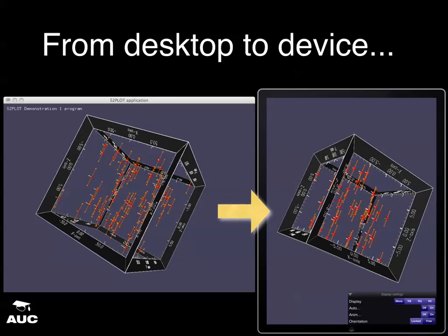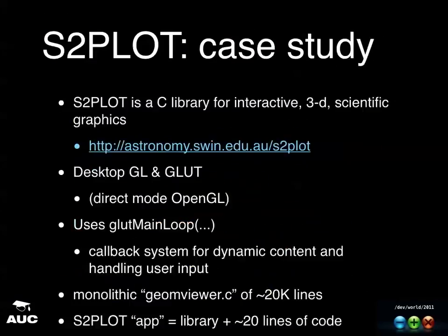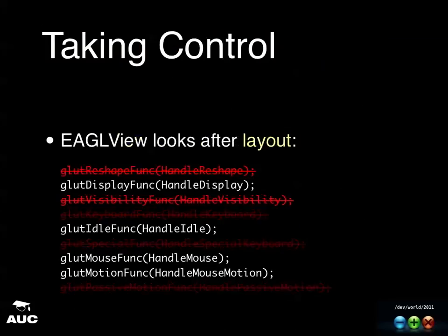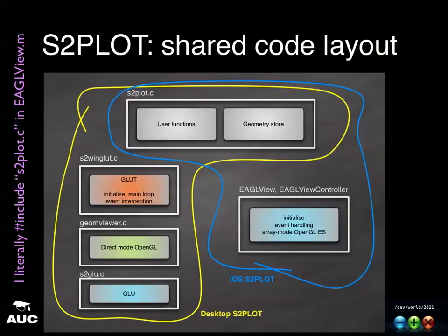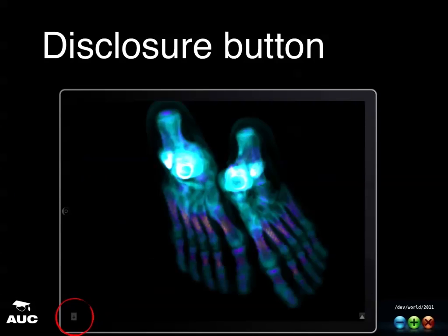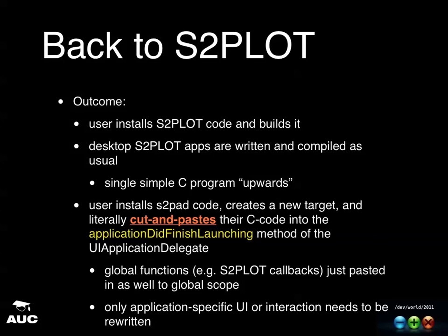This little panel has popped up from the side and lets me choose display modes — mono, red-blue, red-green, red-cyan stereoscopic. I can choose to have auto-spin on or off. I can choose an orientation — I can lock the orientation of the iPad so when I spin it around, nothing changes.